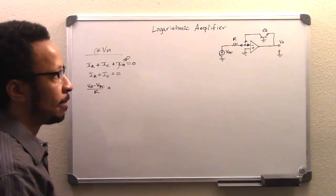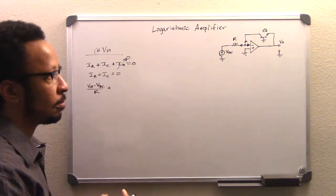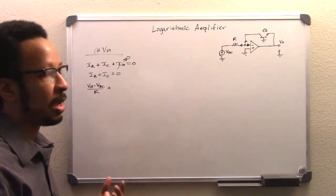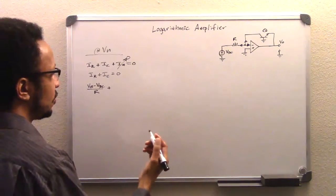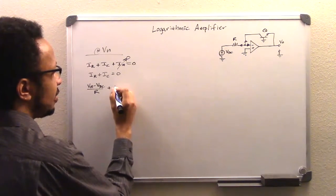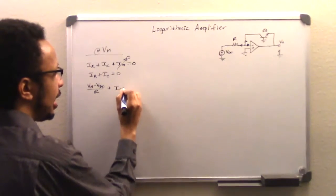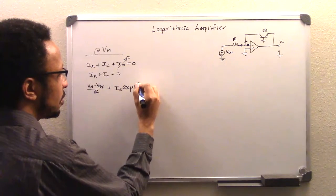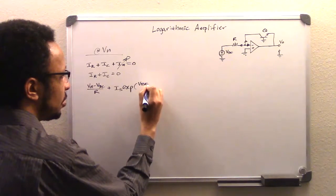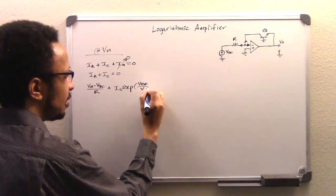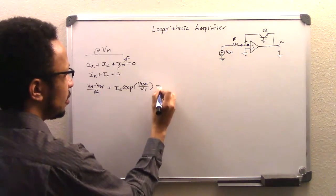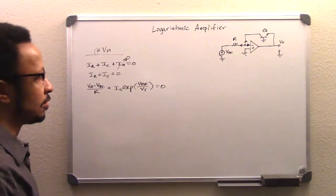we're going to apply the IV current to voltage relationship element law to it, which is just basically that IC equals IS exponential VBE divided by VT, our thermal voltage. And that's all set and equal to zero.